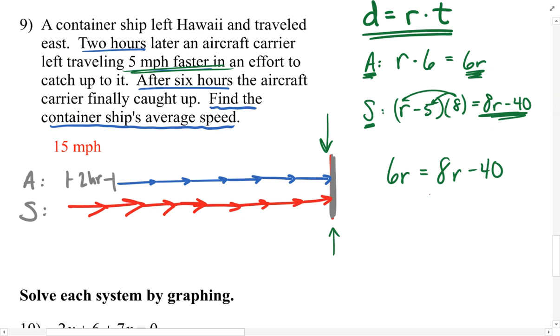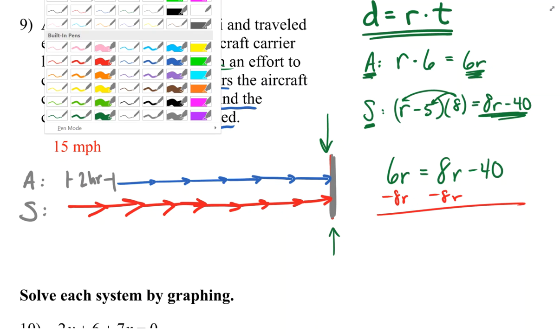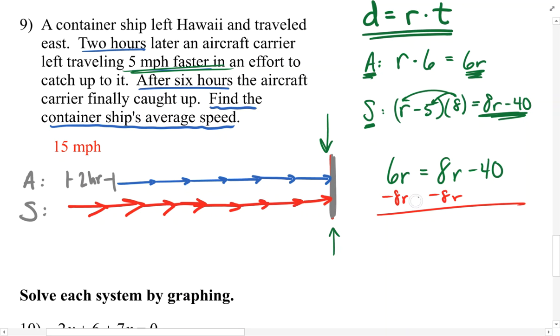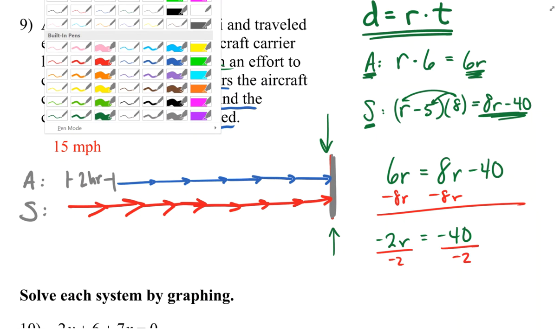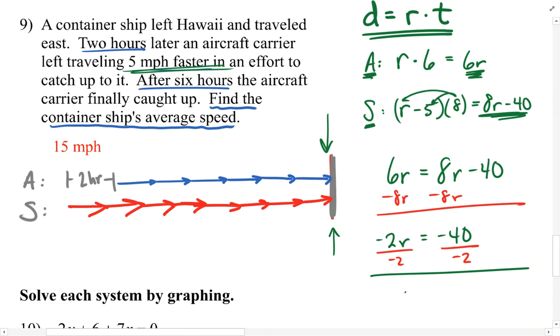From here, we can follow the same procedures as before. Clear parentheses, combine like terms, isolate variables, and so on. And we're actually very close to the finish at this point. I'm just going to subtract 8r to mark this as negative 2r equals negative 40. And then we'll divide both sides by negative 2 to isolate r. And we'll make a note that r is equal to 20.